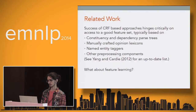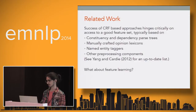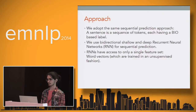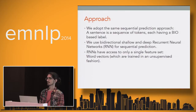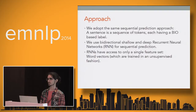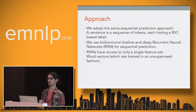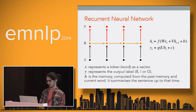The main question we ask is whether it's possible to achieve comparable or even better performance using a feature-learning-based approach rather than feature engineering. To this end we adopt the same token-level sequential prediction approach. Instead of using CRFs as the sequence labeler, we use bidirectional recurrent neural networks. Our RNNs have access to only a single feature source: pre-trained word vectors trained in an unsupervised fashion. The only human intervention occurs at the labeling of the supervised data, not in the feature-designing stage.